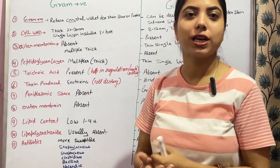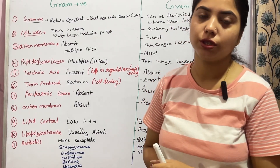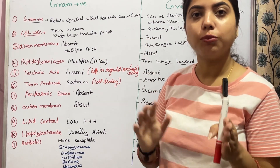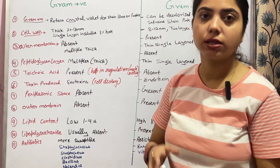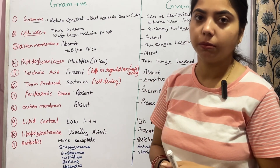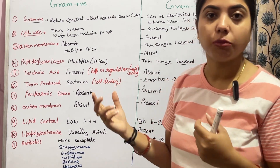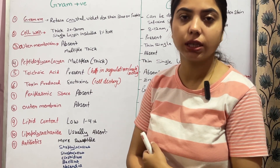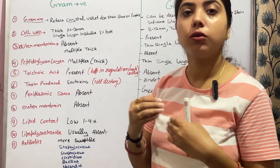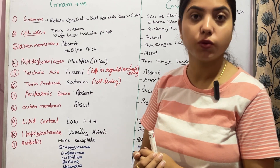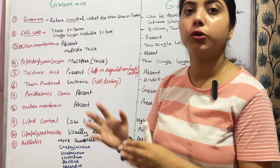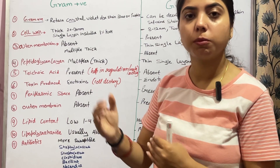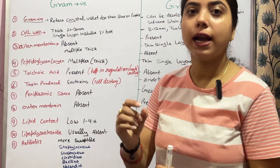Hello everyone, welcome back to the channel Jiya Shanky Medical Education. Today's topic is to study gram positive and gram negative bacteria differentiation. To differentiate gram positive and gram negative bacteria, we use gram stain, and we use various types of stains and counter stains to separate them from the cell.